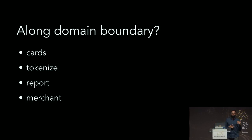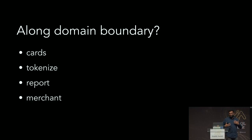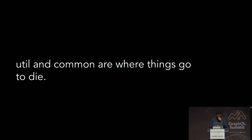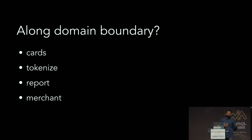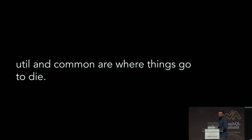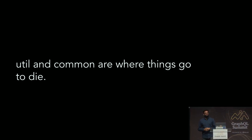We considered splitting our schema along domain boundaries. Some obvious domains in our industry are cards, tokenization of cards, reporting, merchant data, and so on. We soon discovered that if we split along this line, we would end up with a common file. And as you know, util and common are where things go to die — if you have any kind of util or common, this is where you end up dumping things you don't really want to think a lot about. So we didn't want that.